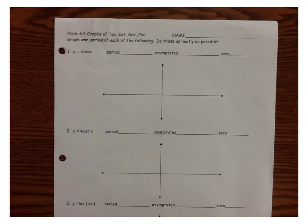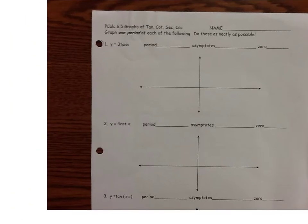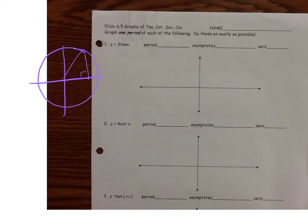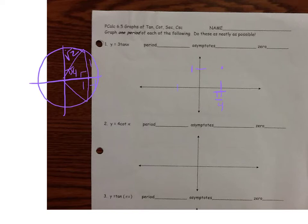Now let's talk about other trig graphs — we've done sine and cosine, and now we'll cover tangent, cotangent, secant, and cosecant. For tangent, recall the unit circle. At 45 degrees (pi/4), the coordinates are (1/√2, 1/√2), so tangent(pi/4) = 1. At negative pi/4, only the y-value changes sign, giving tangent = -1. Tangent of zero equals zero, since it's y over x.